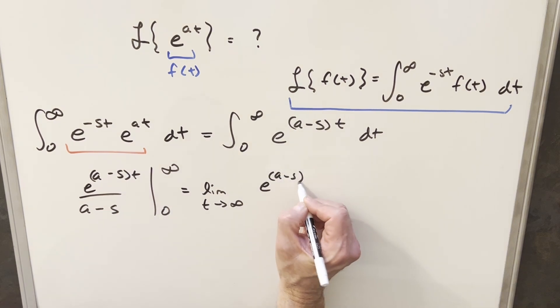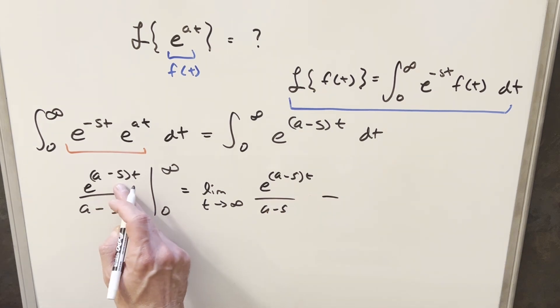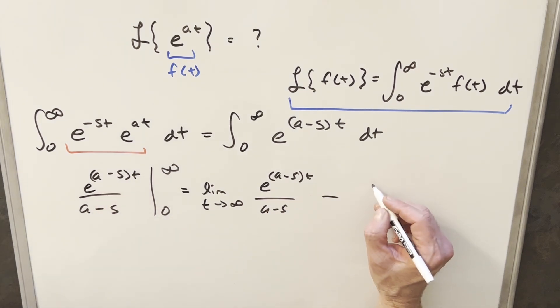e to the (a minus s)t over (a minus s). And we plug in 0 here. We have e to the 0, which is just 1, so we have 1 over (a minus s).